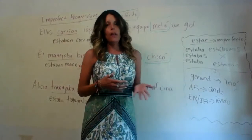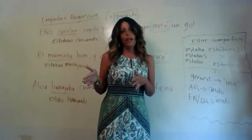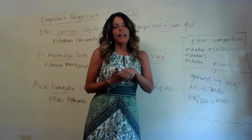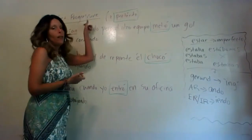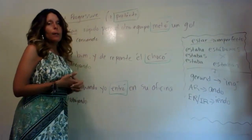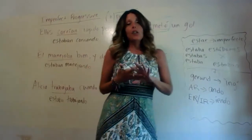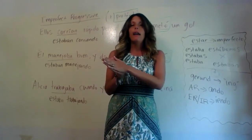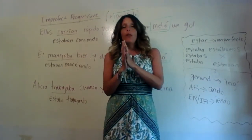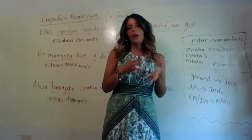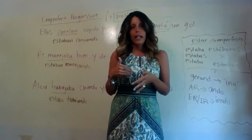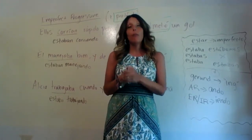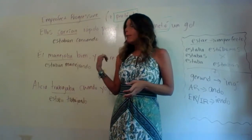A good segue from the imperfect is a grammar tense called the imperfect progressive. The imperfect progressive is interchangeable with the imperfect that we talked about in a prior video. So remember we have the preterite, we have the imperfect, and now we have the imperfect progressive, which is interchangeable with the imperfect in certain scenarios.